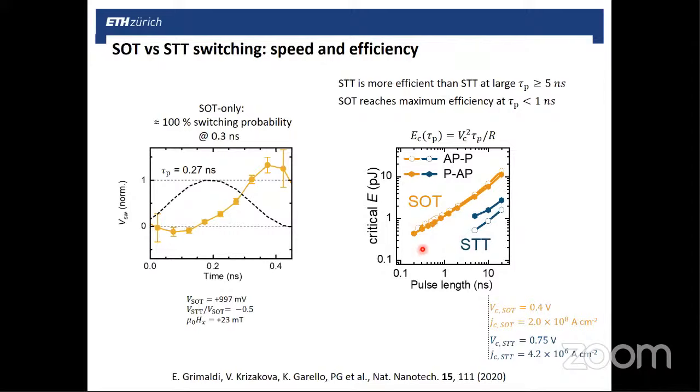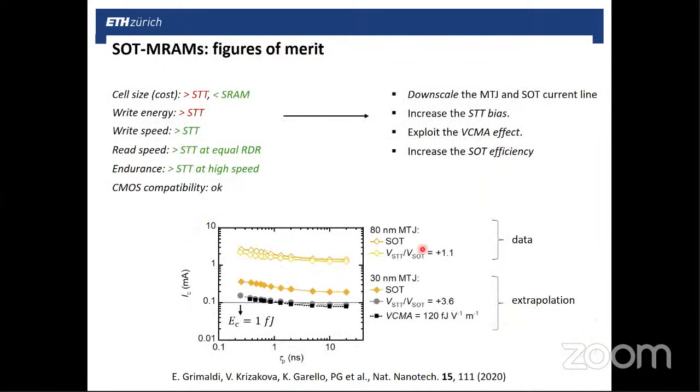In fact, we believe that fast switching is the limit where SOT is really competitive, also for reliability purposes. So here are some general comparisons in terms of cell size. SOT three-terminal cells are more costly than STT but probably less than SRAM. They need more energy to write, but they can be faster. They can be faster also in reading, at least at equal read disturbance rates. They can be pulsed many times without damaging the tunnel junction.